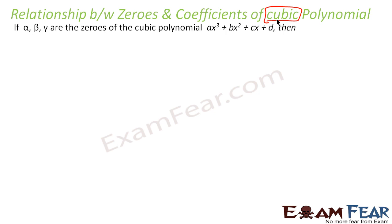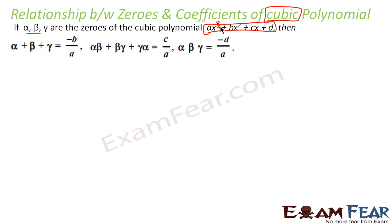So here, if alpha, beta, and gamma are zeros of this cubic polynomial — because a cubic polynomial has the form ax³ + bx² + cx + d — then: alpha + beta + gamma = -b/a; alpha·beta + beta·gamma + gamma·alpha = c/a; and alpha·beta·gamma = -d/a. This is the formula we have.